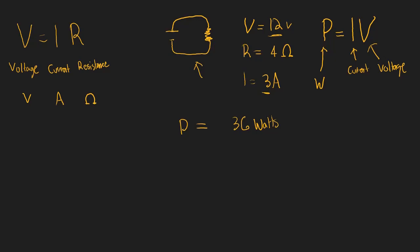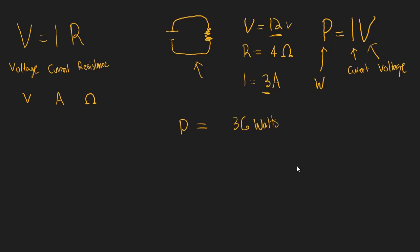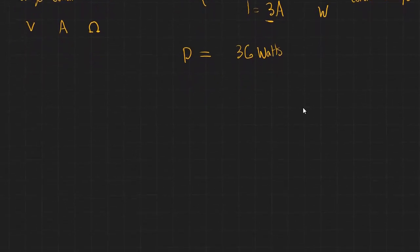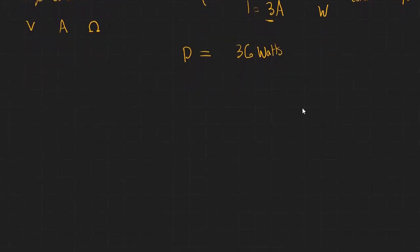Now we know how to calculate power out of a circuit, and we know that when we're given two of the three variables — voltage, current, or resistance — we can figure out the third. The question is: how do we calculate resistance for a circuit when it's not necessarily obvious? There are a couple of ways and a couple of considerations.